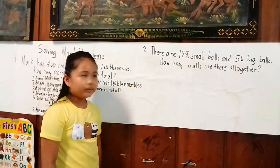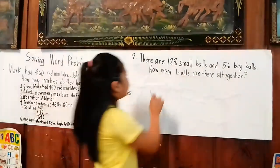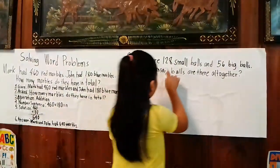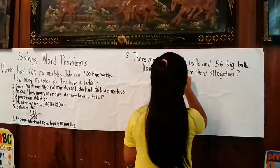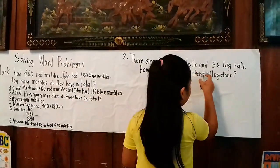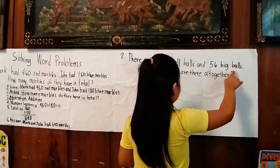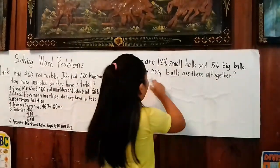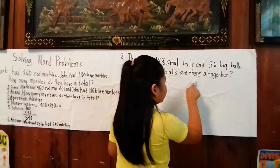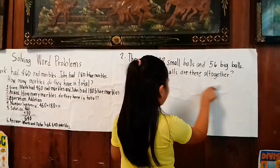Here is number two. There are 128 balls and 56 balls. How many balls are there altogether?